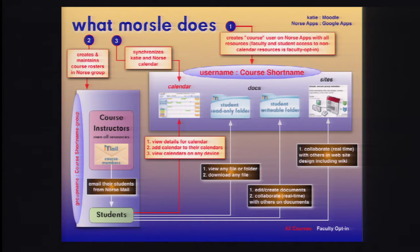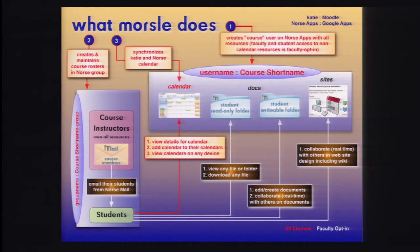The course instructors own all the resources. It also emails all the students using Gmail so that you've got a really good audit of what you've done. I should point out these legends: Katie, which is what we call Moodle, and Norse Apps, which is what we call Google Apps because we're a Norwegian school. The red lines are for all courses, and the white lines are faculty options. We synchronize all of the Katie and Norse calendar, we synchronize permissions based on enrollees, and we create a student read-only folder and a student writable folder for collaboration.